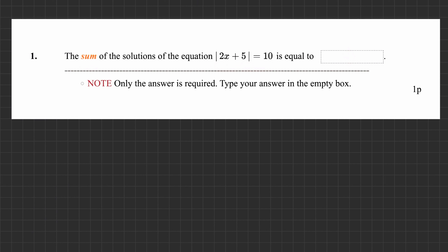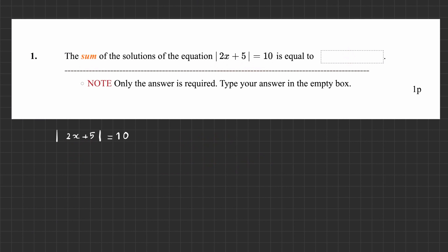That's very simple. So absolute value of 2x plus 5 is equal to 10. There are two possibilities. If I ask you what is the number whose absolute value is 10, of course one immediate answer is 10, but there is another answer, because absolute value is talking about the magnitude of the number. So there are two possibilities for this question mark. You have to consider both.